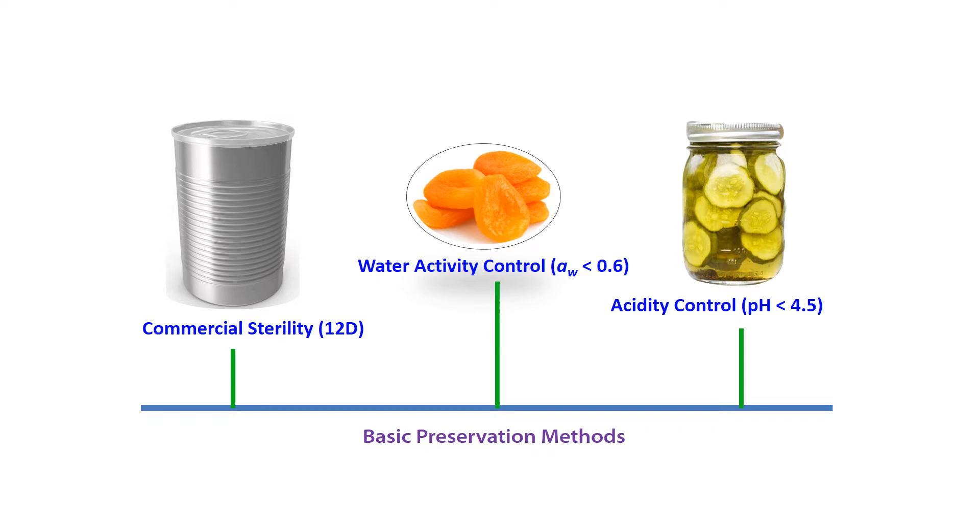In these three cases, the severity of processing is very high. For example, a 12D process could damage the structure, sensory, and nutritional content significantly. Similarly, the process of lowering water activity below 0.6 could damage the structure significantly, and lowering pH could turn into undesired acidic taste. Now I want to develop a product with reduced processing severity as well as microbial safety with retained nutrition and sensory characteristics. What could I do?